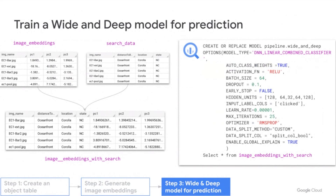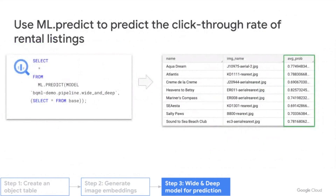Now with your image embeddings in one table, you can combine them with your search data from the website into a single table — that's where the magic happens. You can have structured and unstructured data all in one single place, view, analyze, and build machine learning on top of that. In this case, Twitty used a model called Wide and Deep for training and prediction, and used ml.predict to predict the click-through rate of rental property listings. The output shows the probability for a user to click those rental properties.